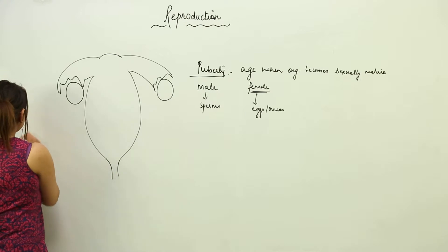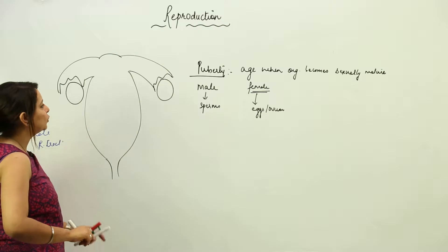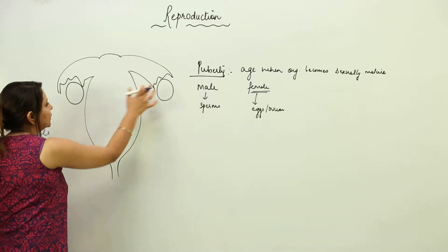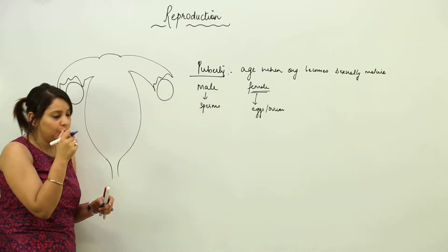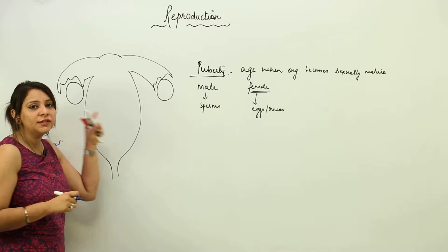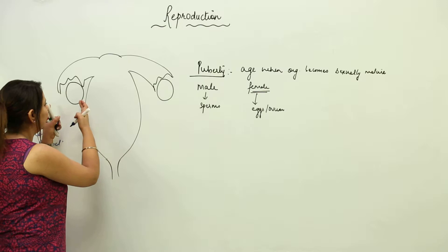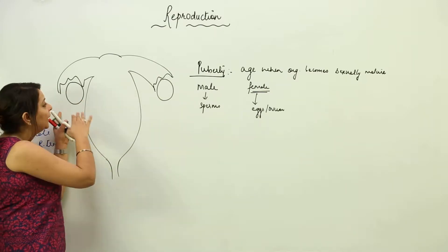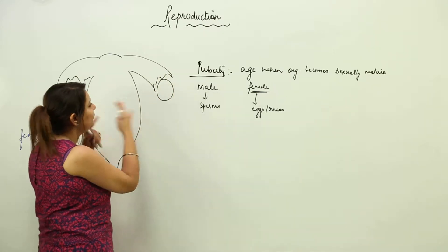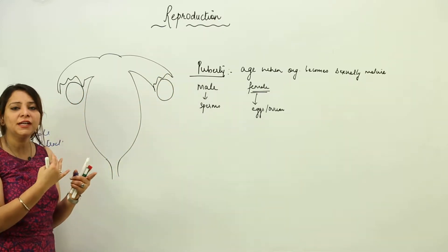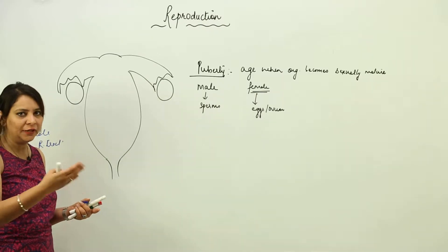This is the female reproductive tract, which we already discussed. The egg starts forming in the ovary. There are many eggs forming in each ovary, but out of all those eggs, only one egg gets mature in one month. Then the next egg will mature from the other ovary. So egg maturation and release occur from alternate ovaries on a monthly basis.